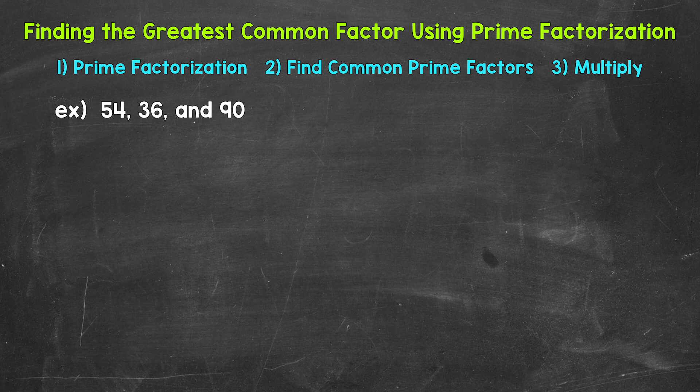Let's jump into our example where we have 54, 36, and 90. So we need to find the greatest common factor of those three numbers. Let's start with the prime factorization of all three of our numbers.